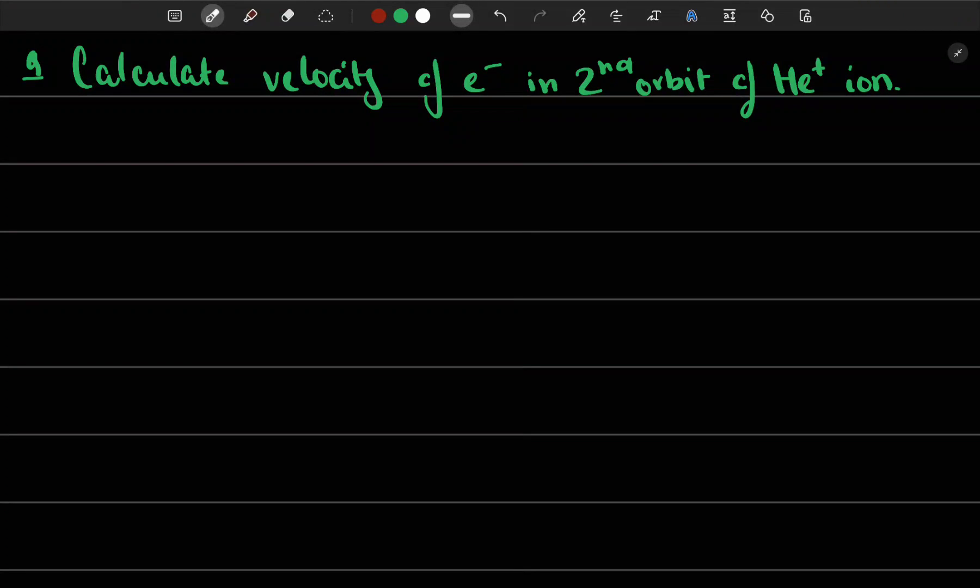Hey guys, today we are back again with a question from chemistry, physical chemistry. Here they are asking us to calculate the velocity of electron in second orbit of helium plus ion.